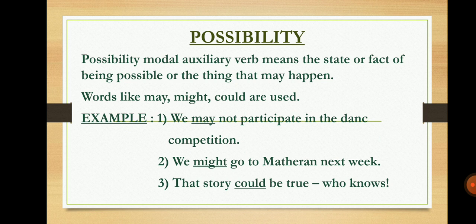Third example: 'That story could be true' — 'could' shows possibility. The story could be true or could not be true — we don't know. Possibility means when we are confused about a particular thing or whether to go or not — that is when it shows the possibility modal auxiliary verb.